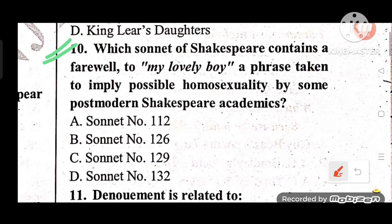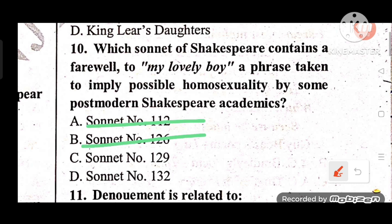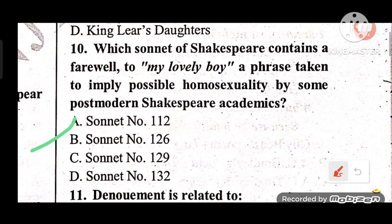Question 10: Which sonnet of Shakespeare contains the phrase 'farewell to my lovely boy,' a phrase taken by some postmodern Shakespearean academics to imply possible homosexuality? The answer is B — Sonnet 126.